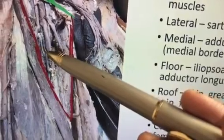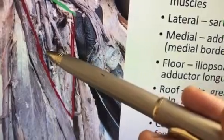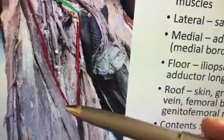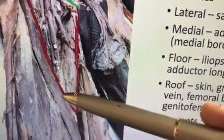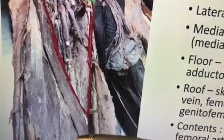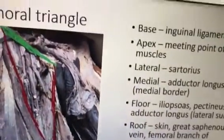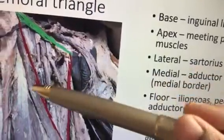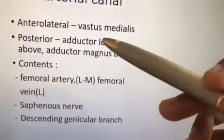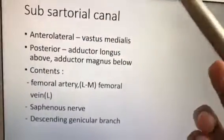As an extra point: the profunda femoris gives four perforator branches. The second perforator is the nutrient artery to the femur, and the fourth perforator is the continuation of profunda femoris. The femoral artery continues down, enters the subsartorial canal, and then enters the popliteal fossa as the popliteal artery. The femoral artery is a continuation of the external iliac artery.